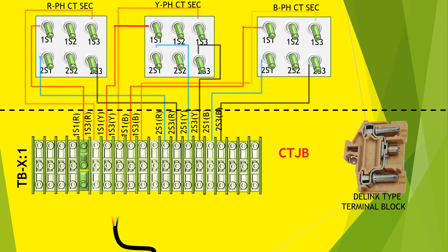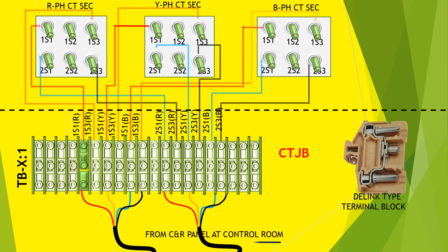Two four-core control cables are laid from the control panel to the CT junction box. D11, D31, D51, D71 ferruled wires are used for metering purpose. D11, D31, D51, D71 ferruled wires are used for protection purpose.